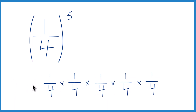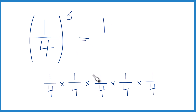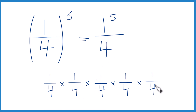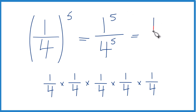We could actually take this and write it like this. We could say 1 — because it's 1 times 1 times 1 times 1 times 1, that's 1 to the 5th power — over 4, and that's also going to be to the 5th power. This way you know that 1 to any power is just going to be 1, because it's just 1 times itself a bunch of times.